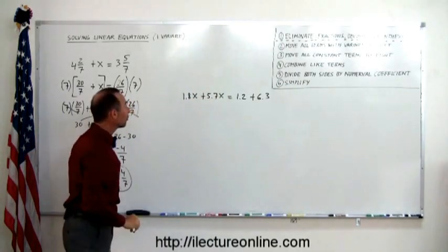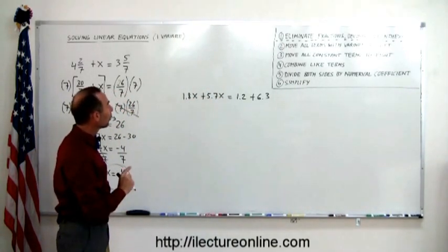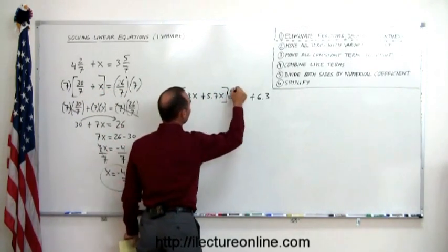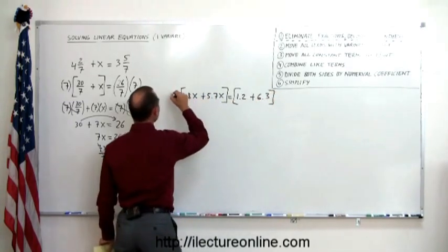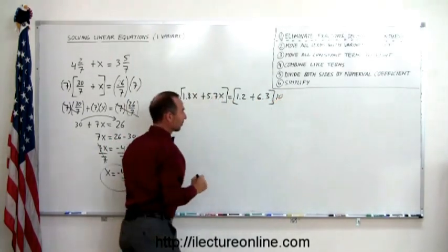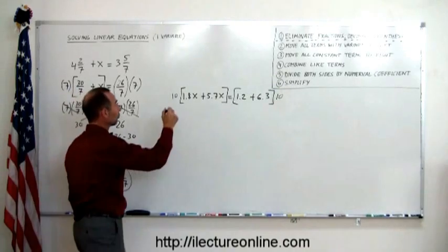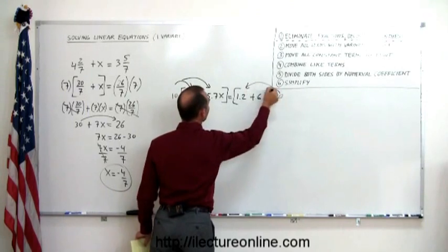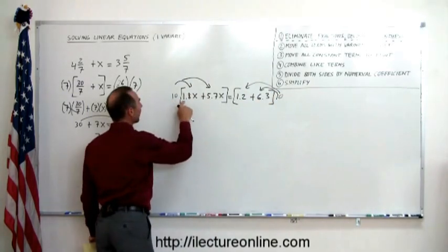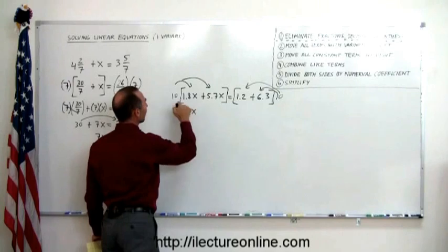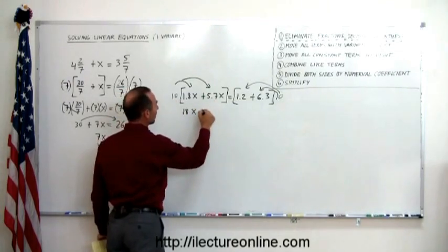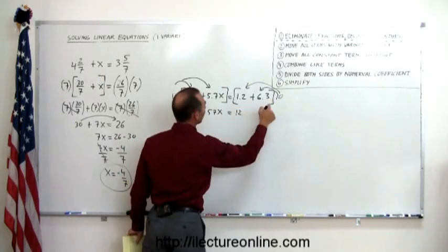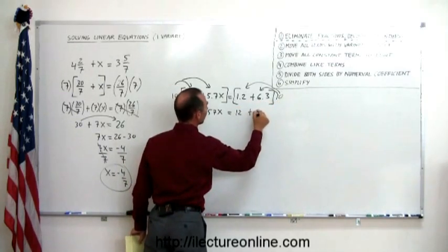We had an equation where we had only one decimal place on every one of the terms, which means we're going to multiply both the left side and the right side of the equation by the number 10. That will get rid of these decimal places. Again, we have to distribute this over every one of these. And 10 times 1.8x gives me 18x. 10 times 5.7x gives me 57x. 10 times 1.2 gives me 12. And 10 times 6.3 gives me 63.